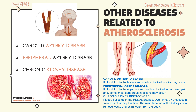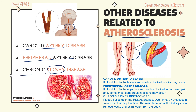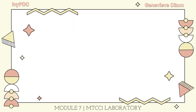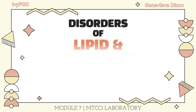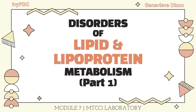Aside from the coronary artery, atherosclerosis can occur in different arteries as well. If seen in the carotid artery, it is known as carotid artery disease. If seen in the peripheral artery, it is peripheral artery disease. And if seen in the artery of the kidney, it is known as chronic kidney disease. That ends our discussion for part one of the different disorders of lipid and lipoprotein metabolism. See you all in part two.